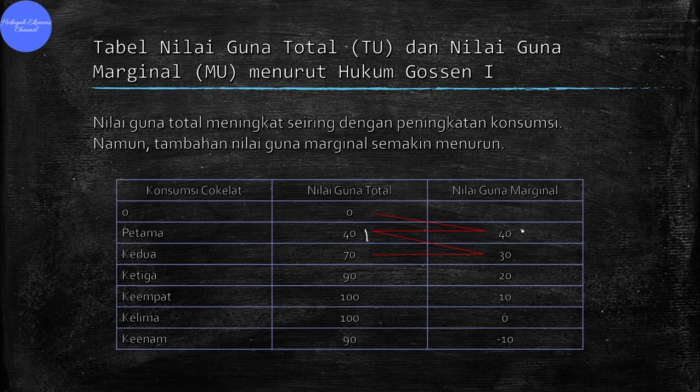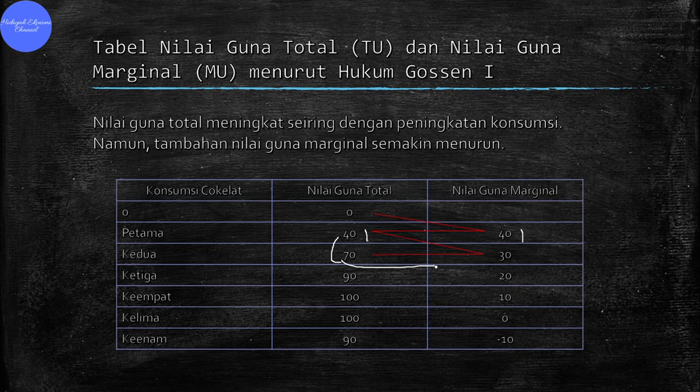Kemudian, pada batang coklat kedua, nilai guna totalnya meningkat dari 40 menjadi 70. Namun, nilai guna marginal atau tambahan kepuasan menjadi berkurang, dari 40 menjadi 30. Angka 30 didapat dari menyelisihkan 70 dikurangi dengan 40. Jadi, dari 40 ke 70 itu tambahan kepuasannya atau nilai guna marginalnya adalah 30.